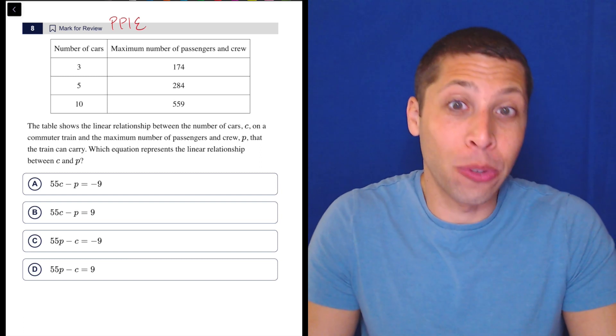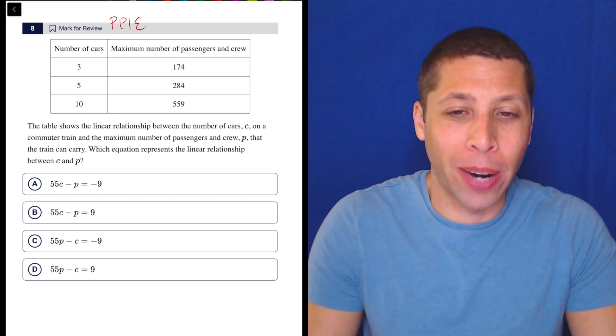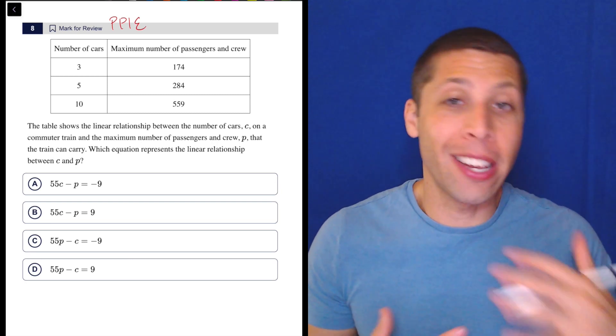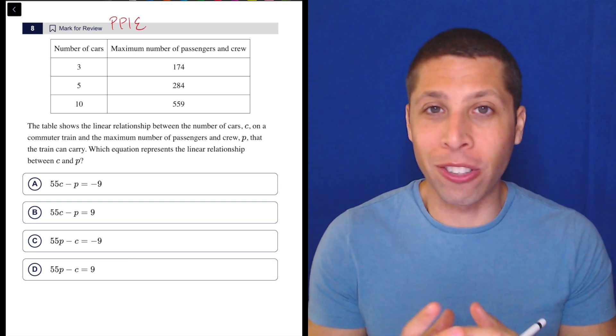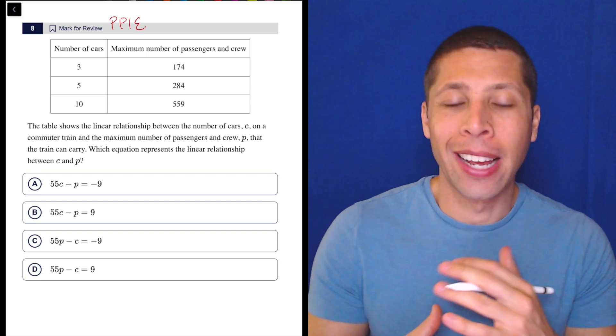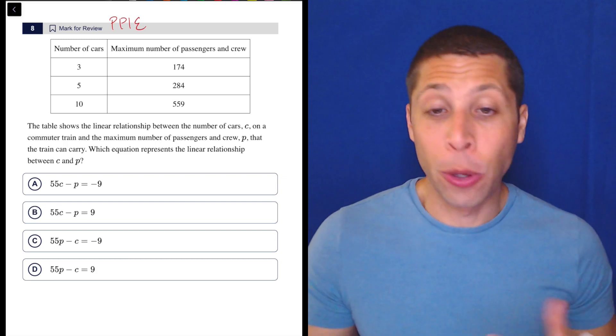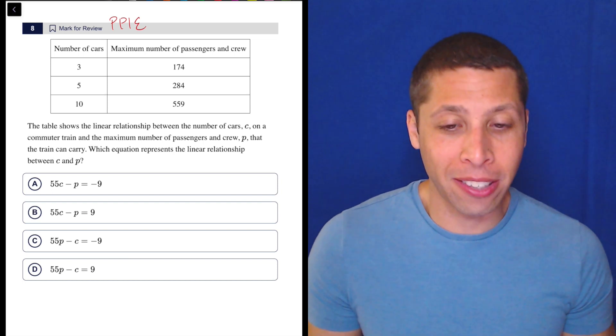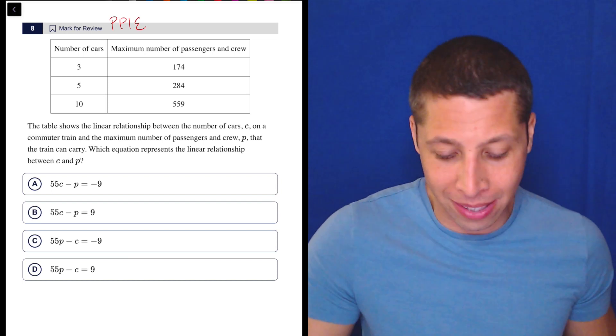Yeah, they didn't use x and y, they used c and p, but it doesn't matter. Now you could solve this by thinking about slopes and intercepts and converting these equations into y equals format, but I think that's risky and unnecessary. You could also create some sort of regression in Desmos, but again, I think that's risky and unnecessary. Just plug the points in.